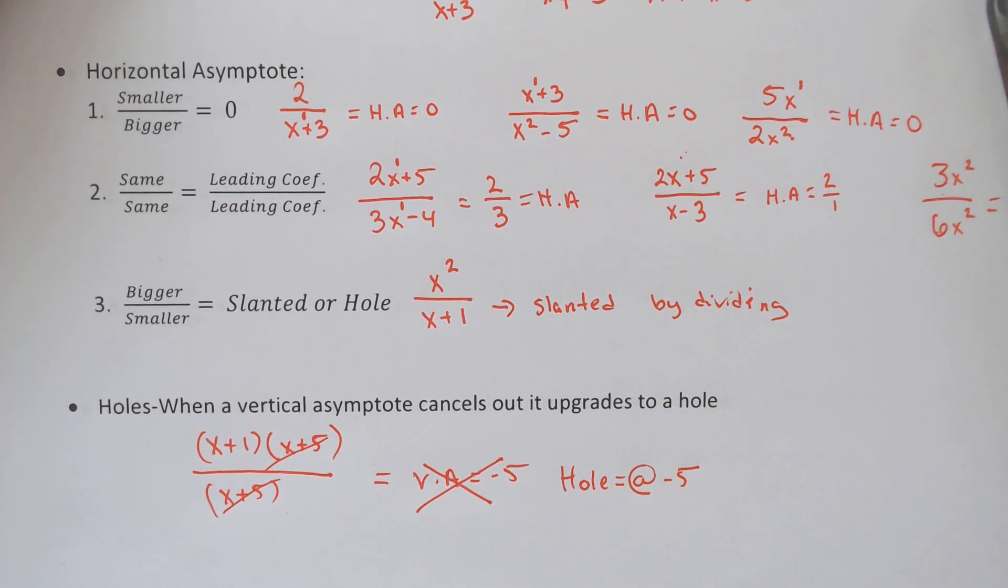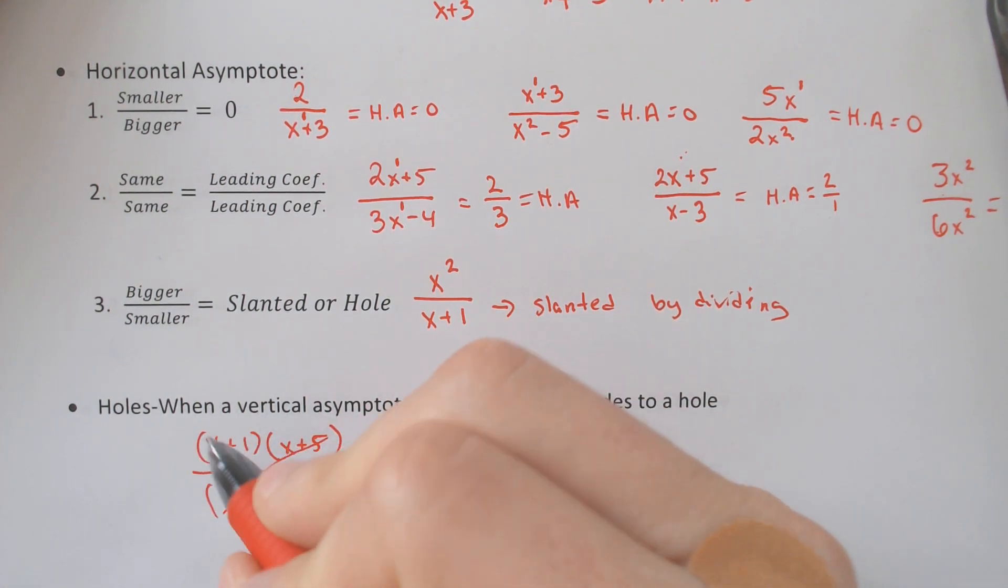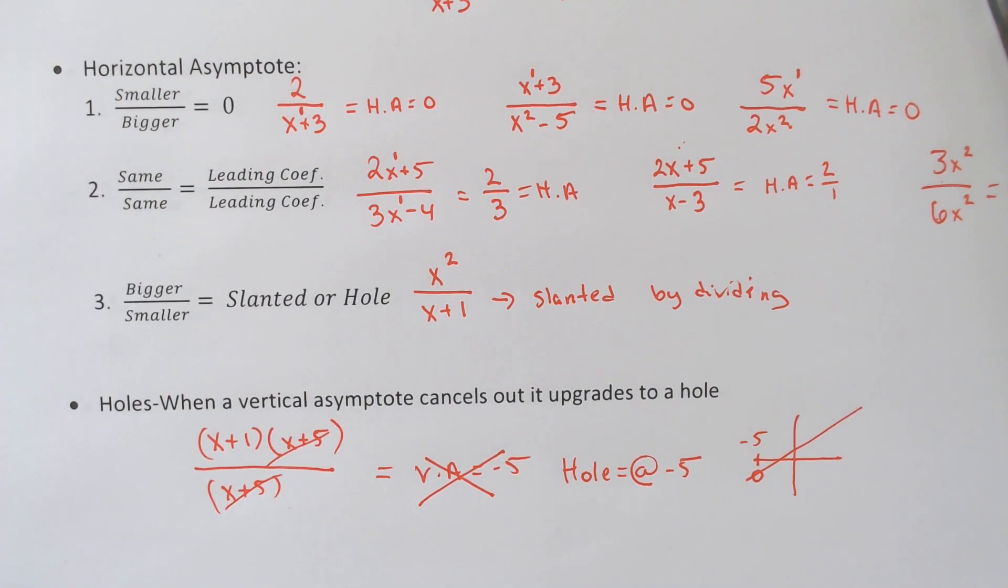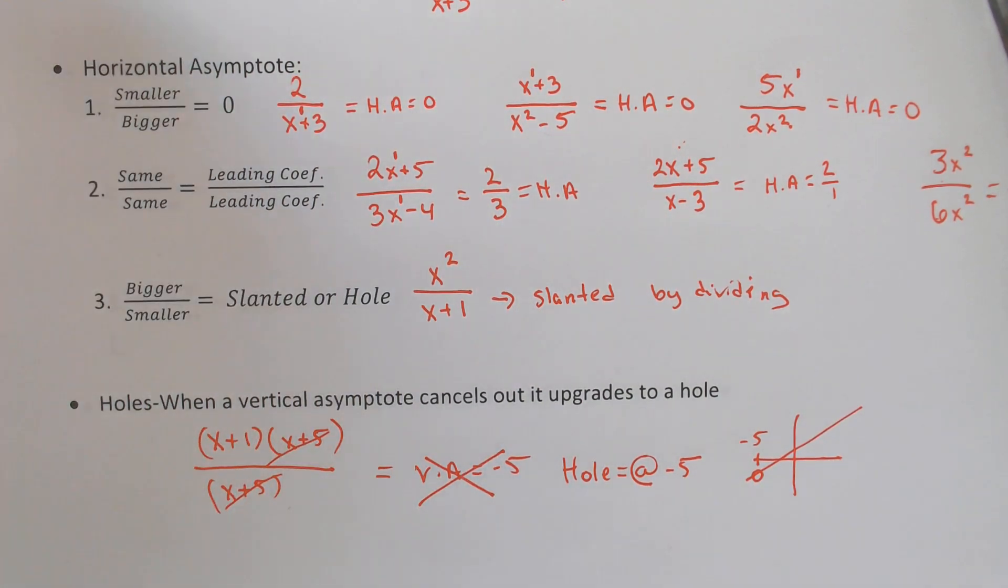And if I were to graph this, it would essentially be graphing this line, x plus 1, which looks like a line, but at negative 5, we should have a hole in the graph. Now if you graph these in your normal graphing calculator, holes really don't show up. You have to know what is going on to determine the hole, and you would get it normally by factoring and crossing it off.